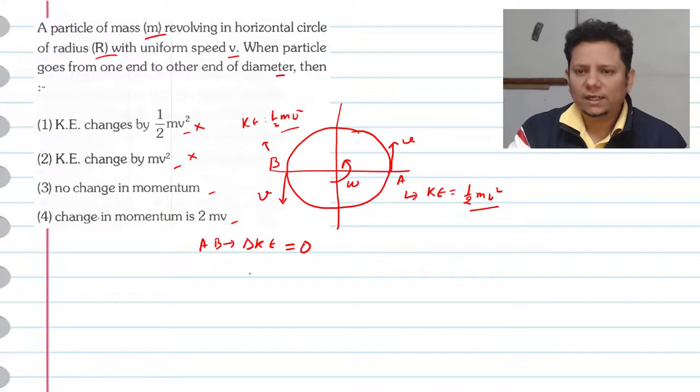Momentum ko check kar lete hain. At point A, the initial momentum will be in this direction. You can write it as mv i cap.